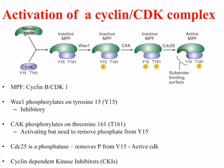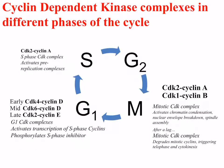In addition to activation, there's also the ability to inhibit the cyclin-CDK complex, and this occurs by the use of cyclin-dependent kinase inhibitors. Cyclin-dependent kinase complexes are active in different phases of the cell cycle, and different cyclins have their expression increased at different times, corresponding to activating different cyclin-dependent kinase complexes.